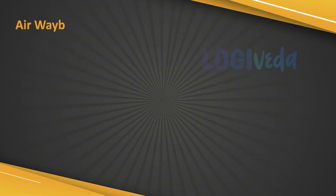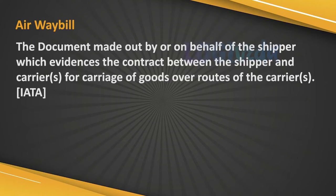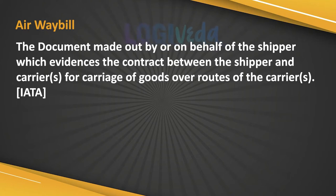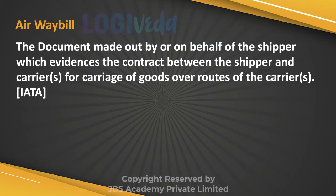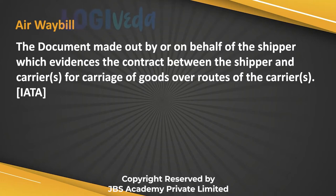Airway bill: This is the document made out by or on behalf of the shipper, which evidences the contract between the shipper and the airline for carriage of goods over the routes of the airline.